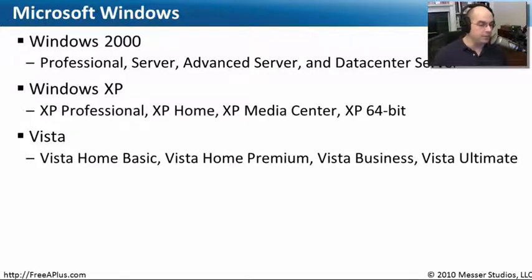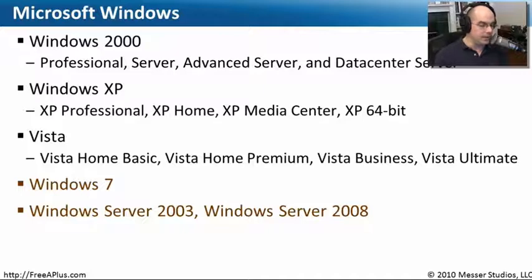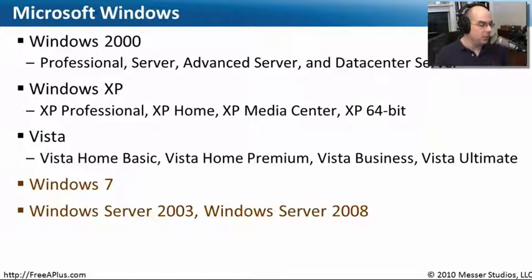There are other Windows versions that we will not be talking about as part of the certification. Windows 7, for instance, is a relatively new operating system on the market and is not part of the CompTIA A+ requirements, at least not yet. Windows Server 2003 and Windows Server 2008 are a little bit outside the scope of the CompTIA certification, which really focuses more on desktops. Windows Server 2003 and 2008, like the name implies, were built just for server environments.